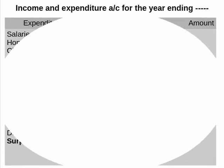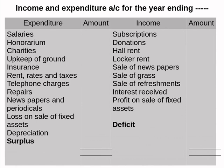Now the format. Income and expenditure account for the year ending — closing date. There are two sides: the debit side is called the expenditure side and the credit side is called the income side.